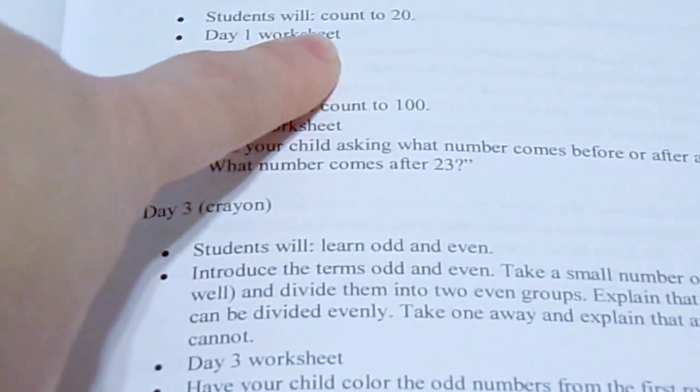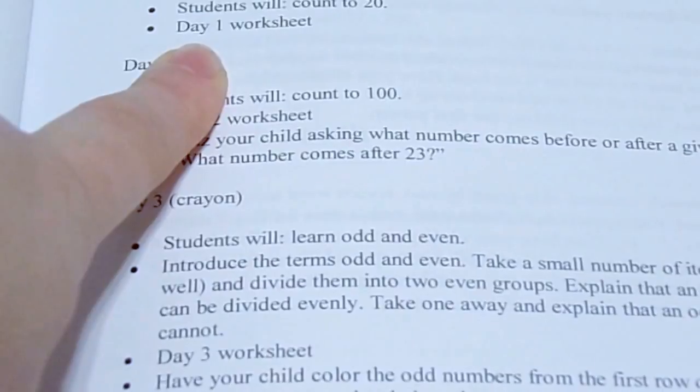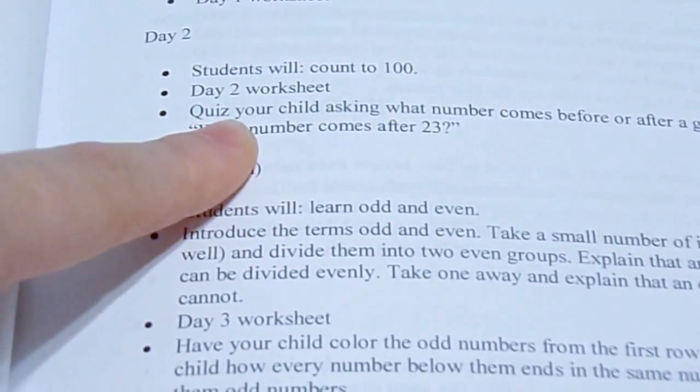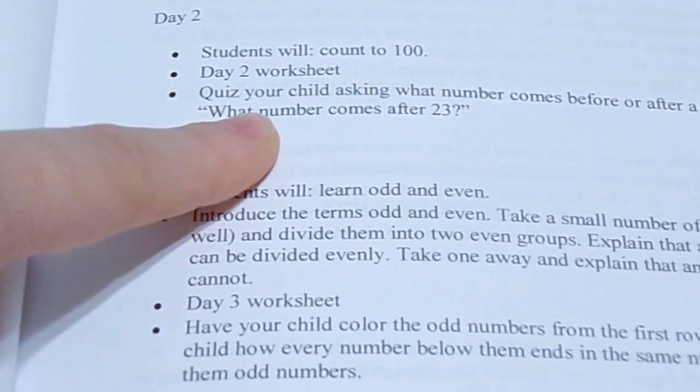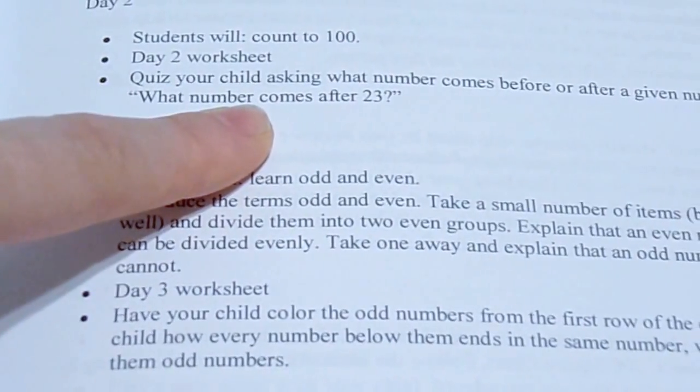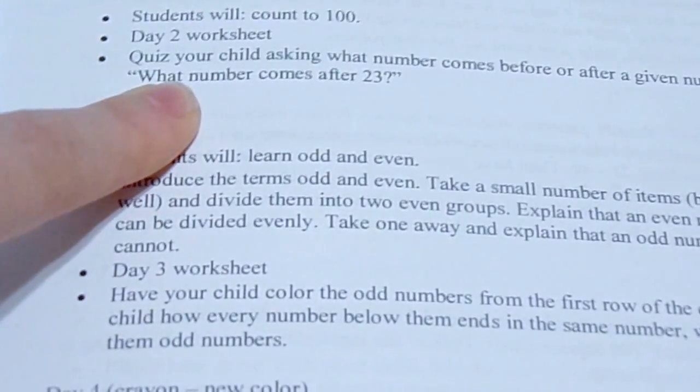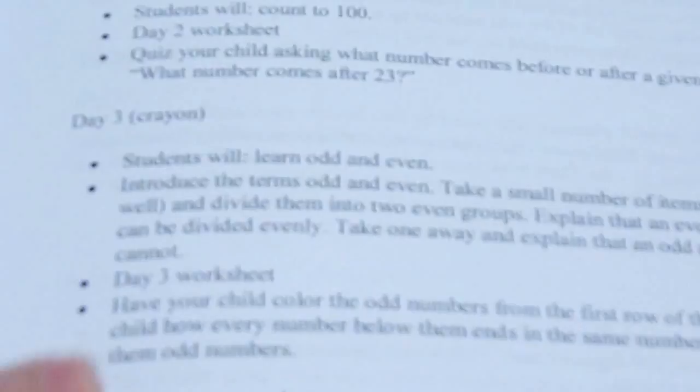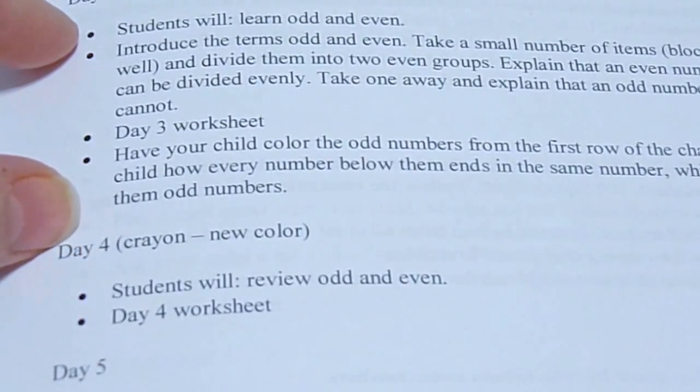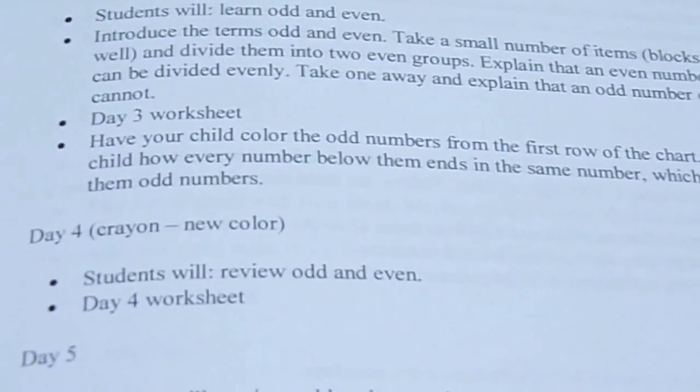Listing what you should do. So students will count to 20 on the first day and then they'll do day one worksheet. Students will count to 100, do day two worksheet, quiz your child asking what number comes before or after a given number. She gives example: what number comes after 23. Basically she gives you a layout of how to teach the lesson and then what worksheet to do.